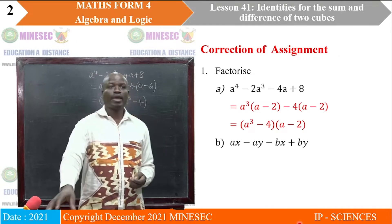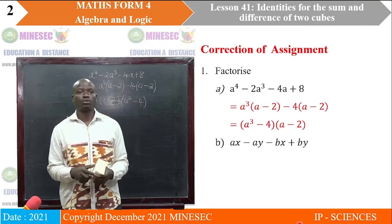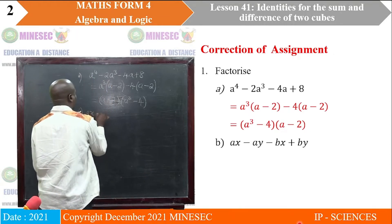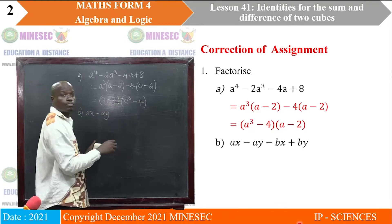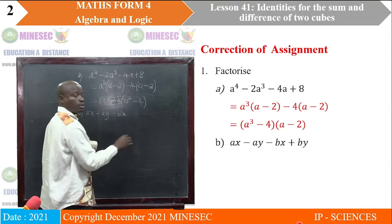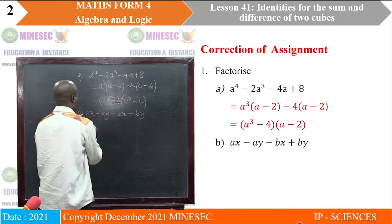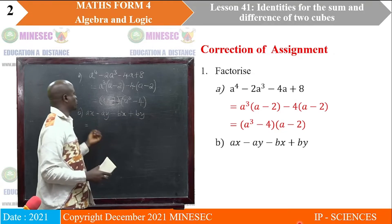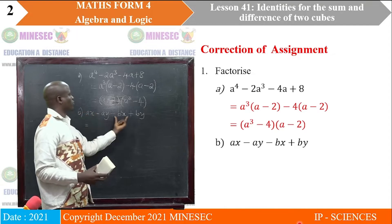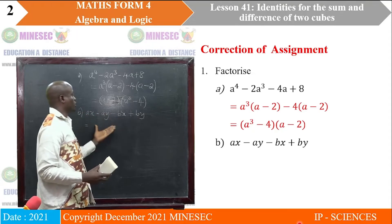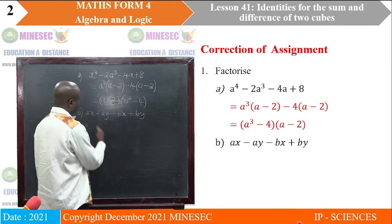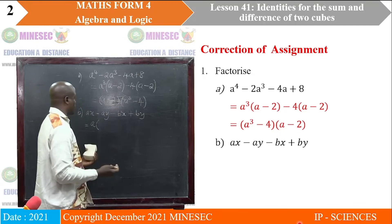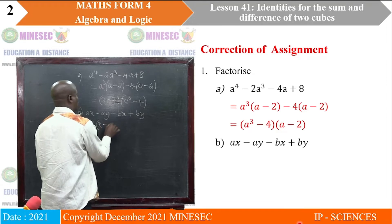The next expression is AX minus AY minus BX plus BY. To factorize, we take the first two terms and then the last two terms. You could rearrange the terms, but there's no need. In the first two terms, A is common. Using the same technique, we see we have A into X minus Y, because A times X gives AX and A times negative Y gives minus AY.